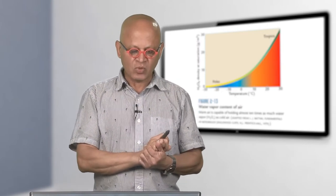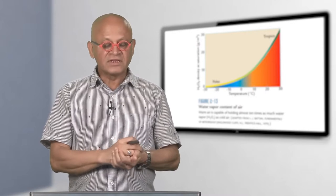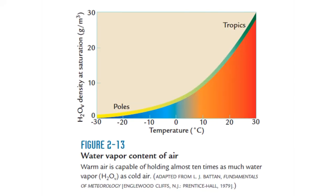Cold air tends to be drier and hot air more humid. Looking at the relation between temperature from minus 30 to plus 30 degrees centigrade and the density of water vapor at saturation, it increases continuously. Poles, typically at minus 10 to 30 degrees centigrade, have very low water vapor content; as you come into the tropics, the amount of water in the atmosphere increases exponentially. This exponential relation produces nonlinear effects — for one degree of temperature change you get a much larger increase or decrease in humidity.